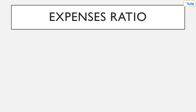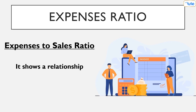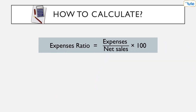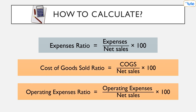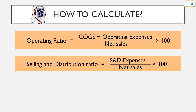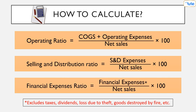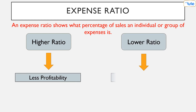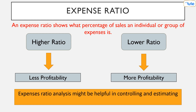Lastly, let's understand the expenses ratio, also known as the expenses-to-sales ratio, which shows a relationship between an individual or group of expenses and sales. It is computed by dividing expenses by net sales and expressed in percentage. Based on different concepts of expenses, it can be expressed in different variants like cost of goods sold ratio, operating expenses ratio, operating ratio (which includes COGS plus operating expenses), selling and distribution ratio, and financial expenses ratio. A higher ratio means less profitability, and a lower ratio means more profitability. Expense ratio analysis is helpful in controlling and estimating the future expenses of a business entity.